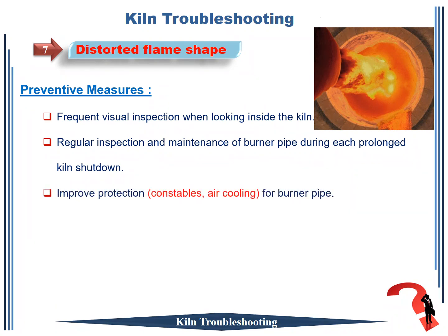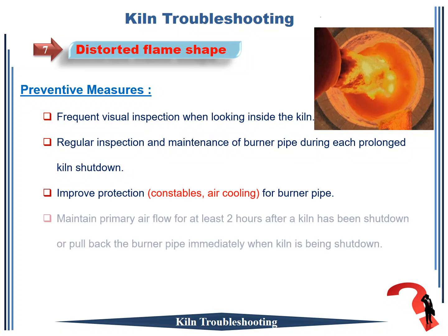3. Improve protection by constant air cooling for burner pipe. 4. Maintain primary air flow for at least two hours after a kiln has been shut down, or pull back the burner pipe immediately when kiln is being shut down.